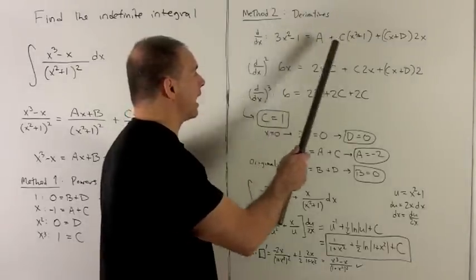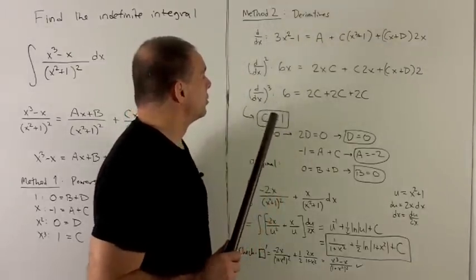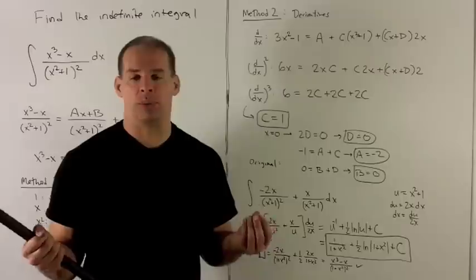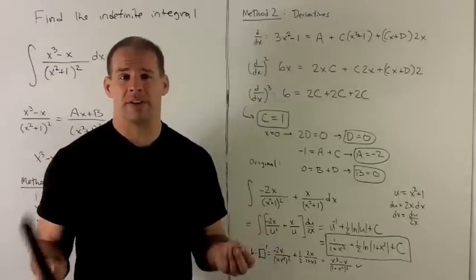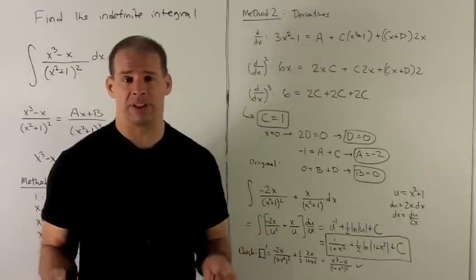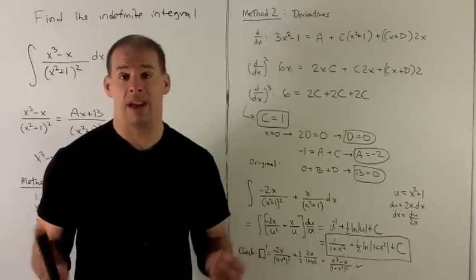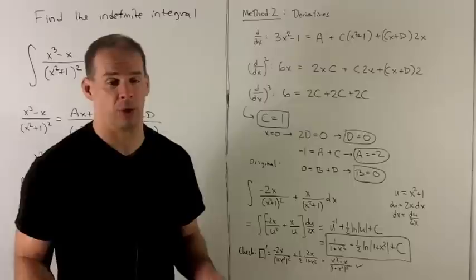We could take derivatives to grind down both sides of the equation. So the idea here is if two polynomials are the same, then the derivatives of both of those polynomials will be the same also, and any further derivatives of those polynomials too.